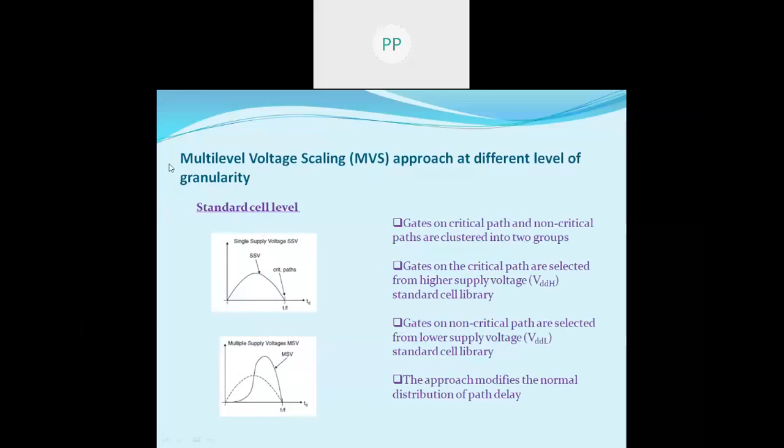This technique is also implemented at the macro or functional level. The basic concept remains the same — if a particular function is not on the critical path, it can be operated at the lower supply voltage. For example, if multiplier number three is not on the critical path, it can be operated at the lower supply voltage to reduce power dissipation. This approach can achieve 10 to 50 percent power reduction.